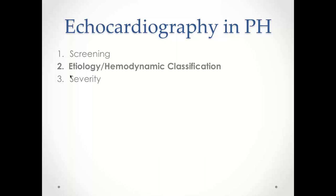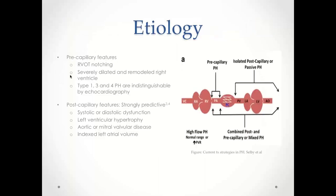Next I'll discuss etiology and hemodynamic classification. When thinking about etiology, echo's main use is in distinguishing between pre- and post-capillary PH, not in identifying the specific pathophysiologic mechanism. Pre-capillary features include RVOT notching and a severely dilated and remodeled right ventricle. Importantly, WHO types 1, 3, and 4 are not readily distinguishable from each other by echo alone.